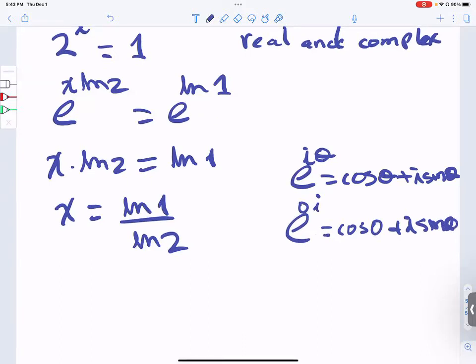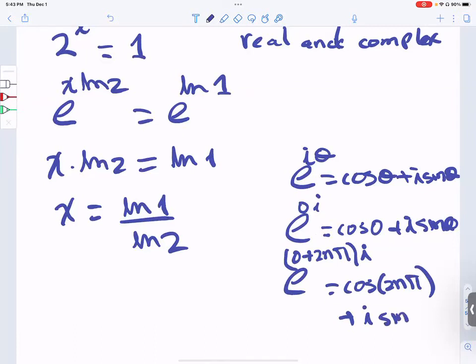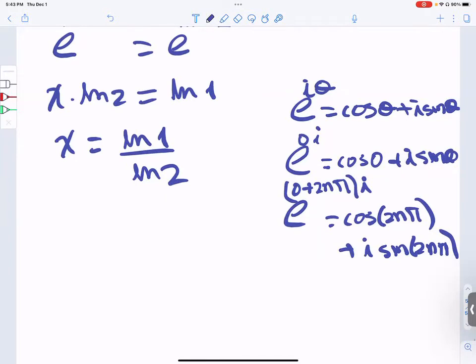But it's also 0 plus 2n pi times i, because the cosine of 2n pi plus i the sine of 2n pi equals 1. The cosine, every time you go around the circle, returns to the same position. If you go 2 pi around the circle,